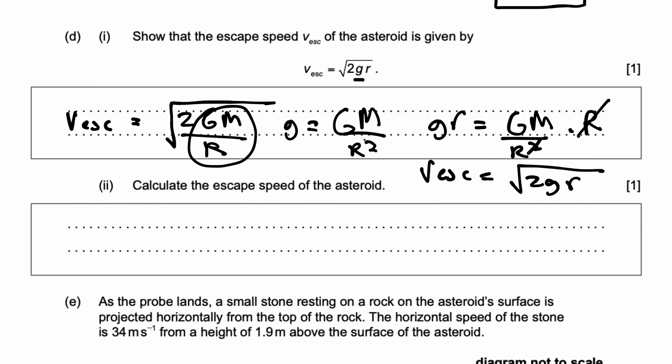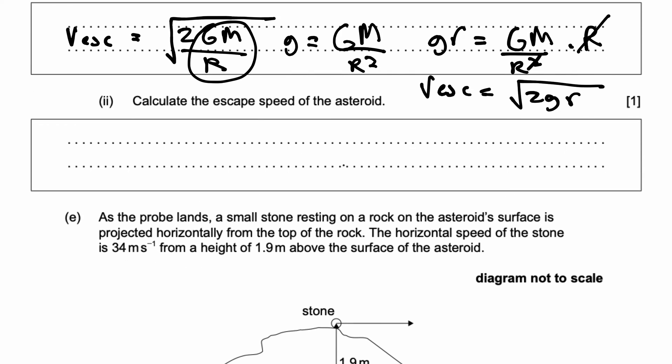Instead of GM/r, I'm writing in terms of g. And because there's an extra radius that I need to cancel out, if I times g by radius, I will cancel out the r² and I'll be left with root of 2gr.